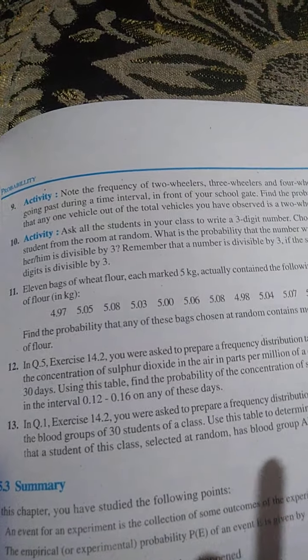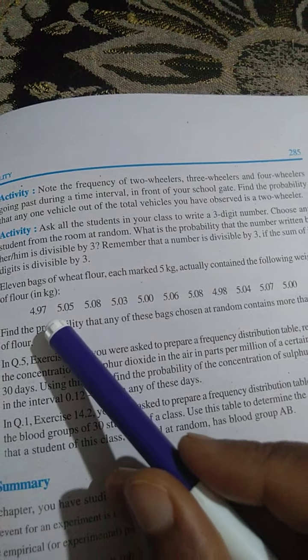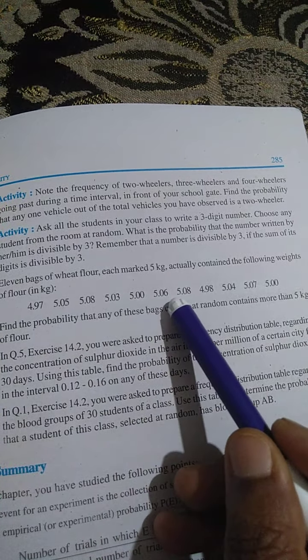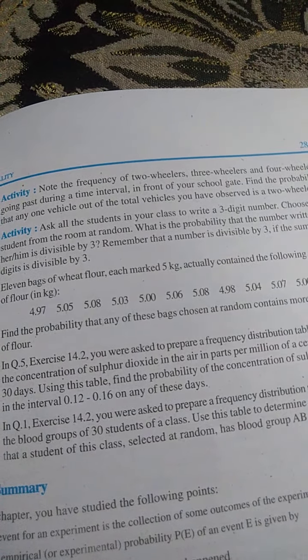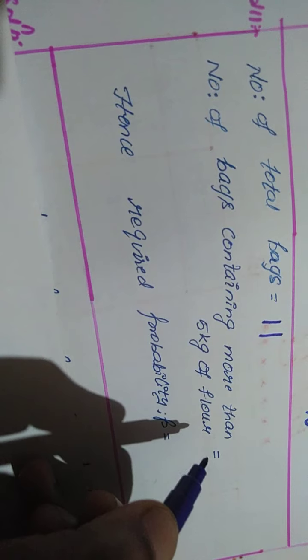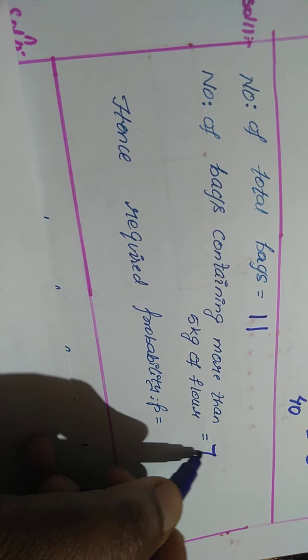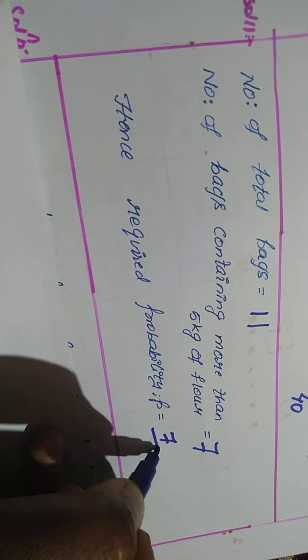Hence, we are going to write the probability. Total number of bags — let us count: 1, 2, 3, 4, 5, 6, 7, 8, 9, 10, 11. So, total bags are 11. Here is your solution children. Number of bags total is 11, but containing more than 5 kg we counted as 7. Hence, the probability is 7 by 11.